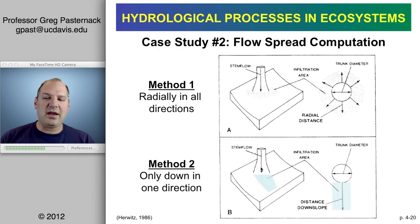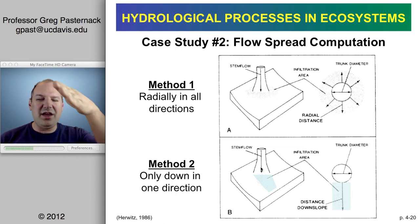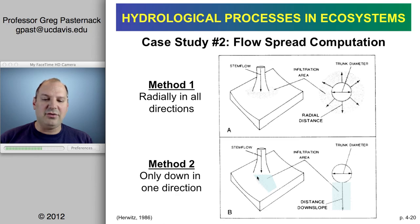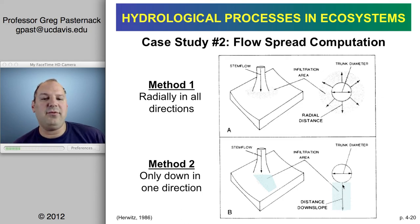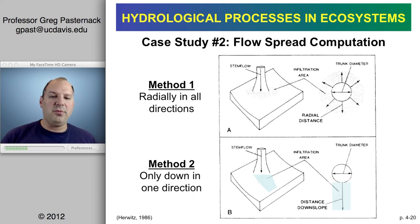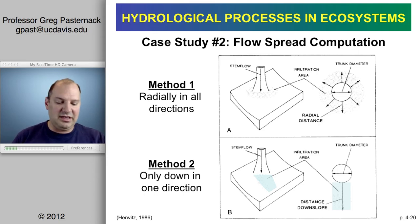Because this is a 22% slope, there's no reason to expect water to spread equally around the tree. It's much more likely to go in the downslope direction. Assuming a rectangular direction, we simply ask how far downslope can we go before all that stem flow is infiltrated. This is really just simple geometry — taking volumes of water, dividing by areas, and calculating distances.